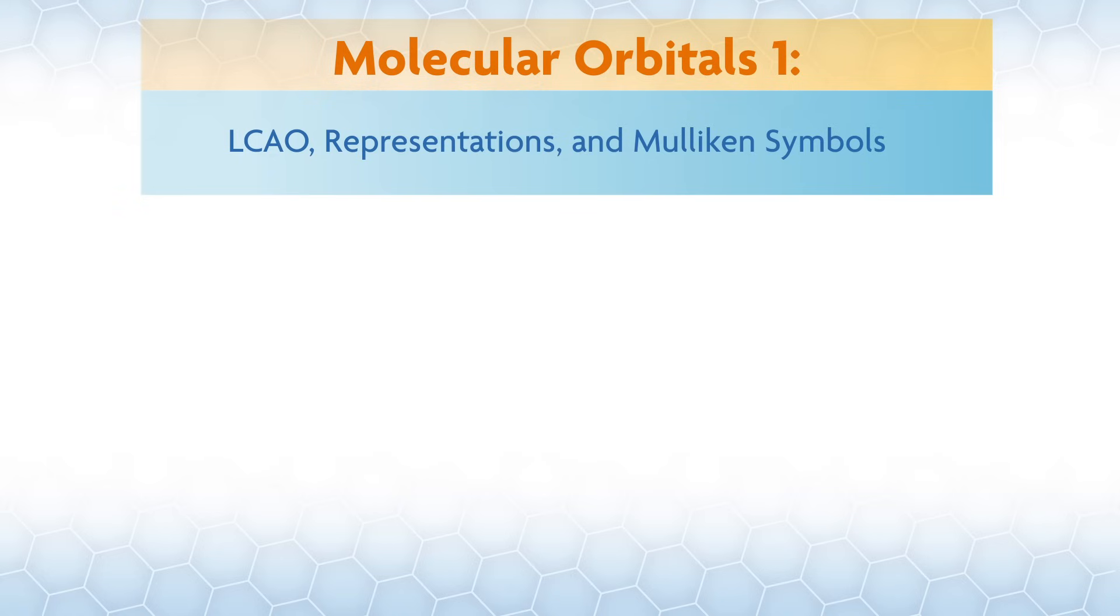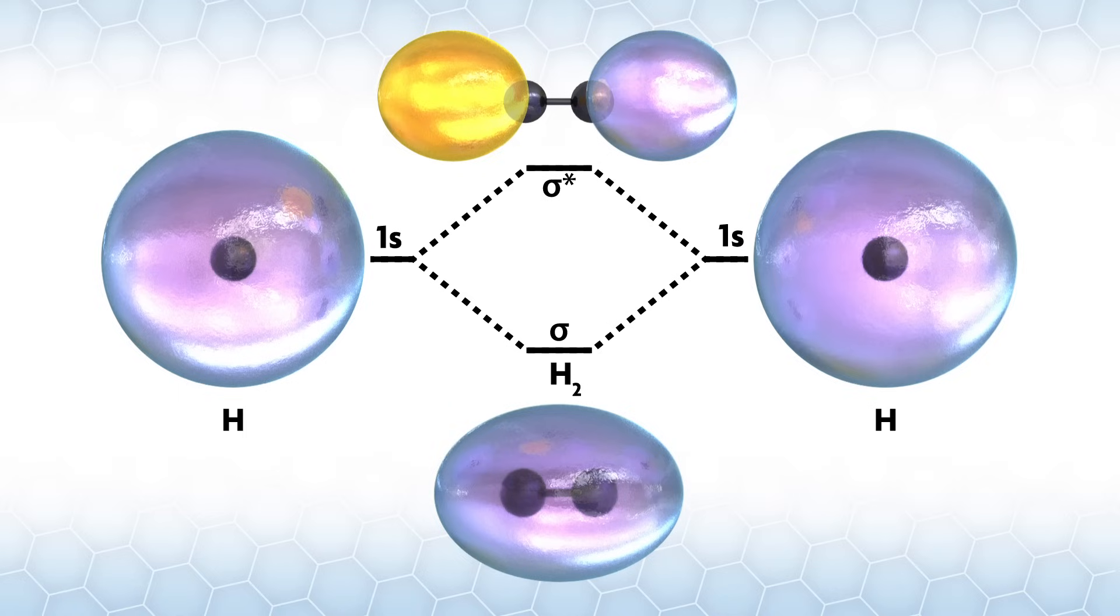From the early days in chemistry, you learn how to generate molecular orbitals for a simple system like H2. Each side of the MO diagram has a 1s orbital. They combine to form a bonding orbital and an antibonding orbital.